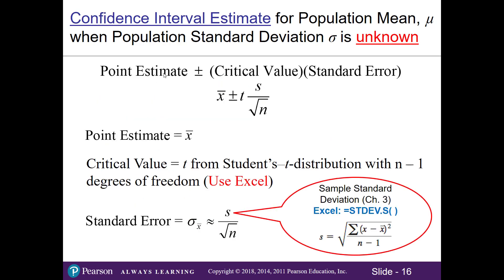While the general format still looks the same — we've got our point estimate plus or minus our critical value and our standard error — we have to modify our formula slightly. Instead of a critical z value, we are now working with critical t values. And since we don't know the population standard deviation, instead of seeing sigma, we now see the lowercase s, which means sample standard deviation.